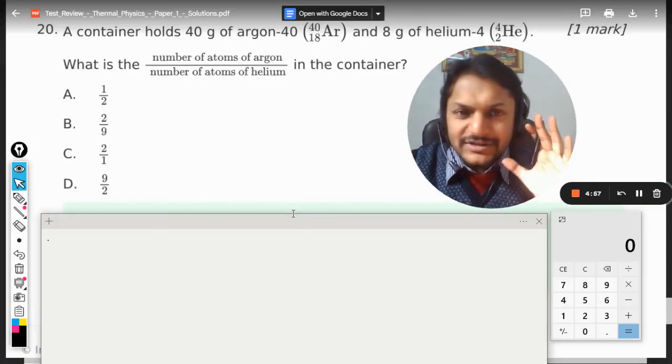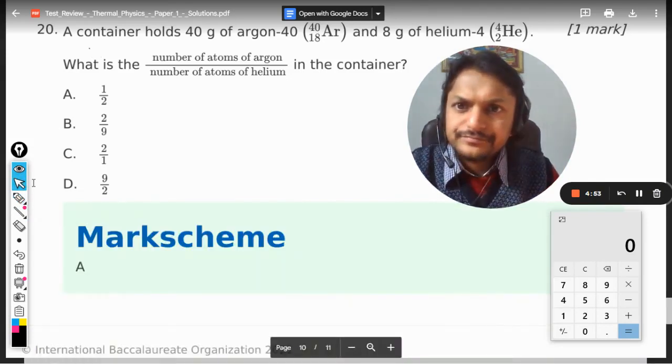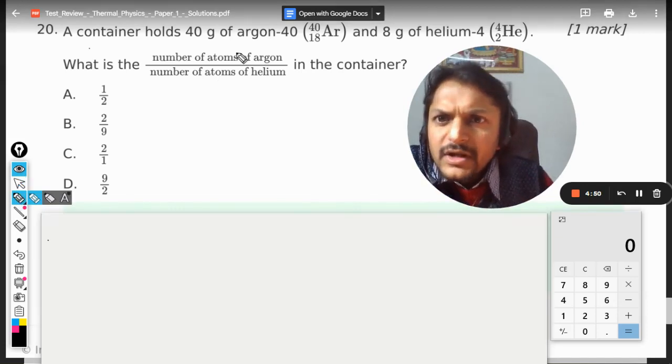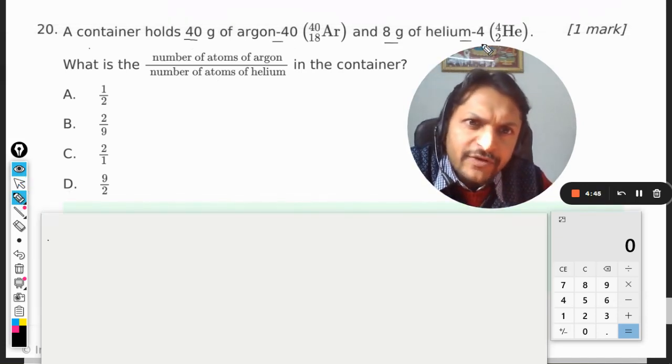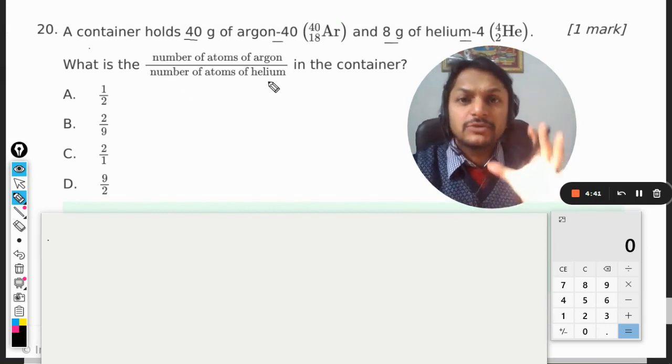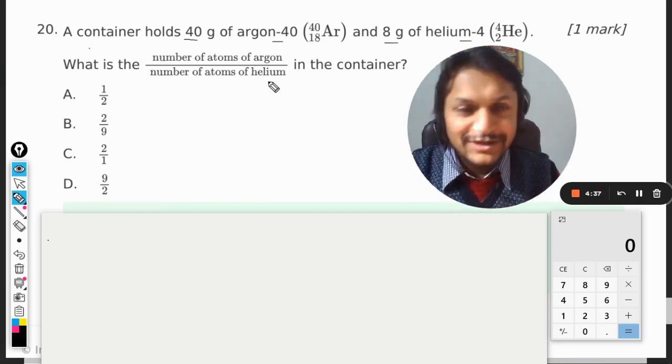Our curious students, let us see what is there in this question. A container holds 40 grams of argon-40 and 8 grams of helium-4. What is the number of atoms of argon divided by number of atoms of helium in the container? So basically the question belongs to chemistry.